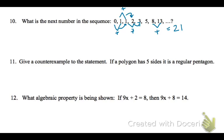On number 11, when they're asking for a counterexample, a counterexample is just an example that shows that it's not true. So you could draw something with five sides that is not regular — remembering that regular means all the sides are equal and all the angles are equal. So both of those would be picture examples of counterexamples.